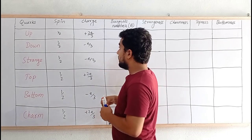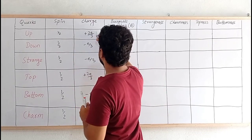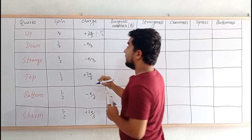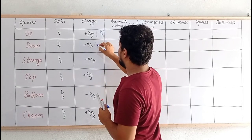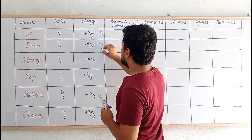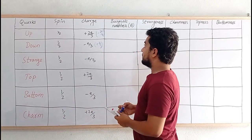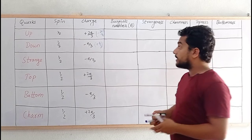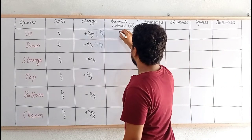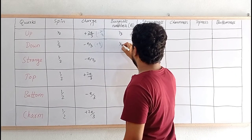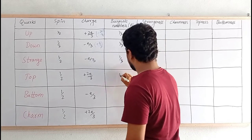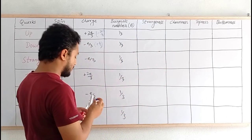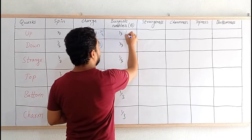For example, anti-up contains -2e/3 and anti-down contains +e/3 — just the sign is opposite. Now let's talk about baryonic number. Every quark has baryon number 1/3 and every anti-quark has baryon number -1/3.